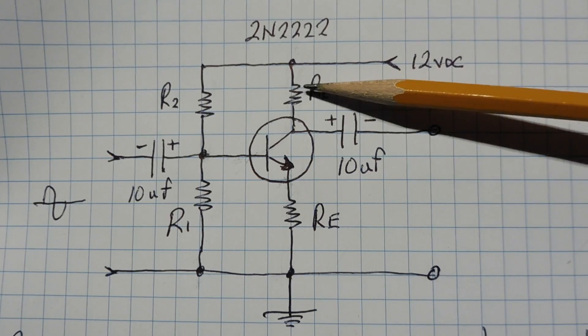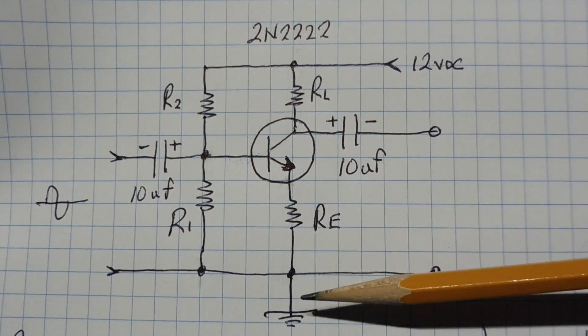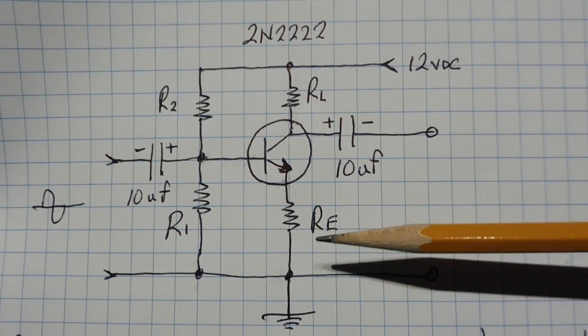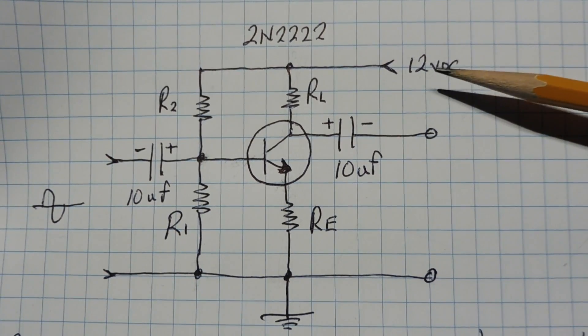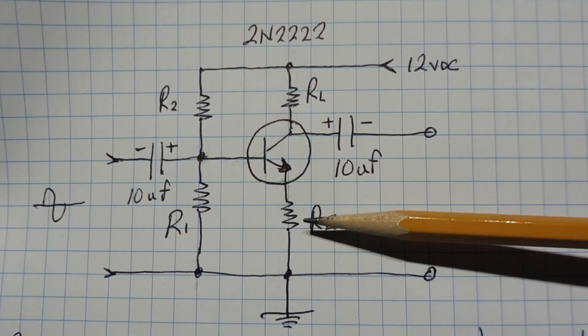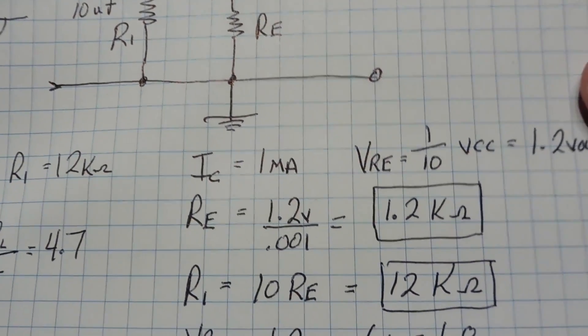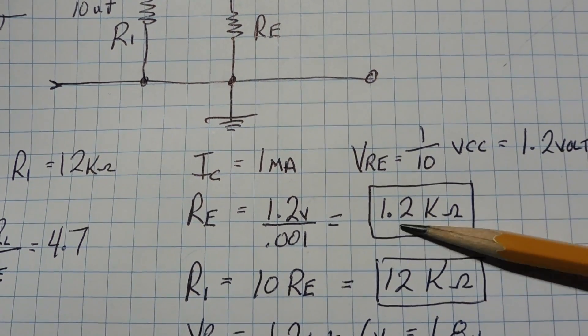So we'll have 1 milliamp flowing through the load resistor, through the transistor, and through the emitter resistor RE. Next we have to determine the voltage drop across RE, and that's usually 10 to 20% of VCC. So we'll pick 10%, so 1.2 volts will be dropped across RE with 1 milliamp flowing through it. So now we can calculate the value of RE: 1.2 volts divided by 1 milliamp equals 1.2K.